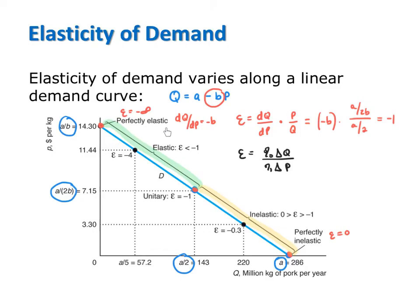Along the top half of demand, say at a point up here, price is relatively large and quantity is relatively small. Because price is relatively large to start with, any change in price will represent a relatively small percentage change.